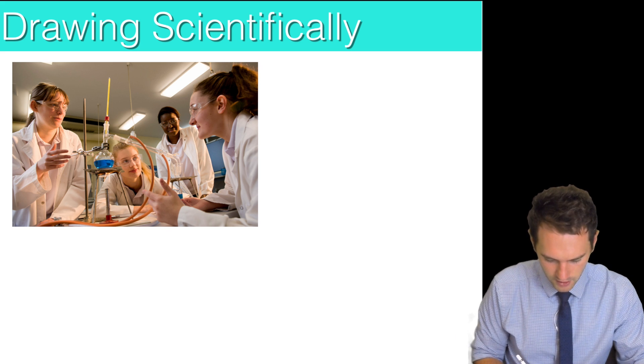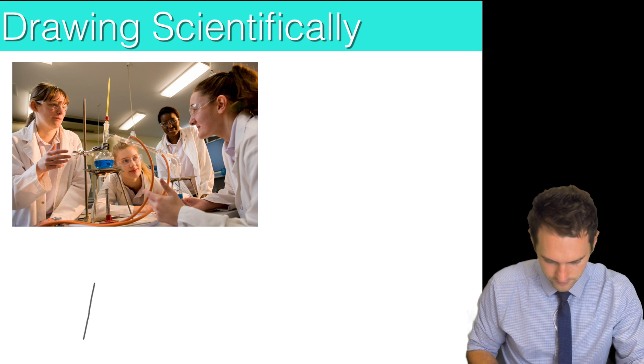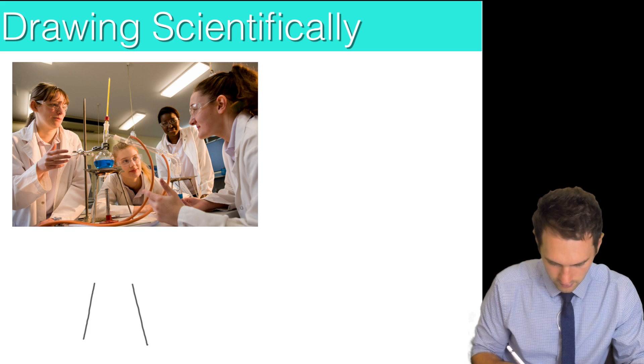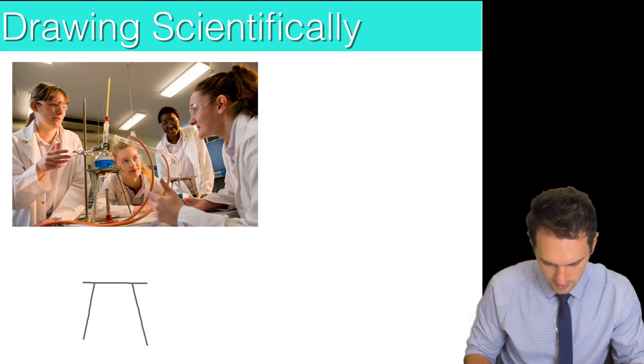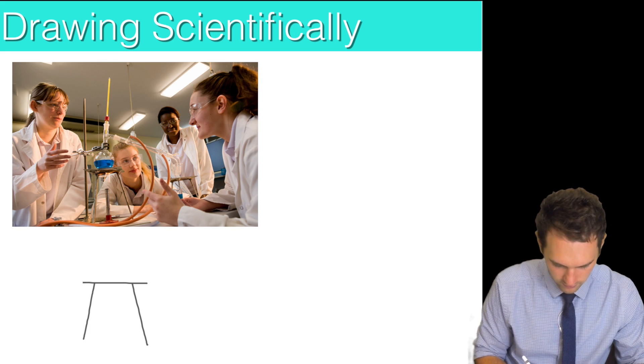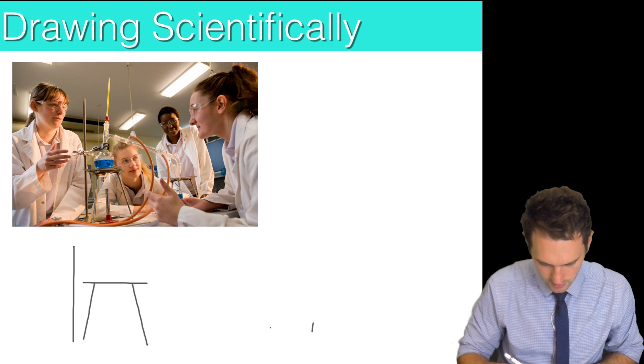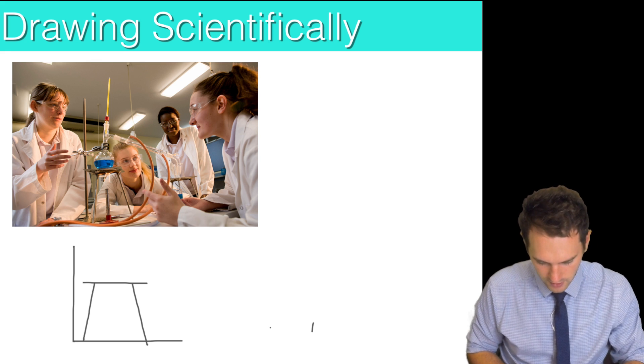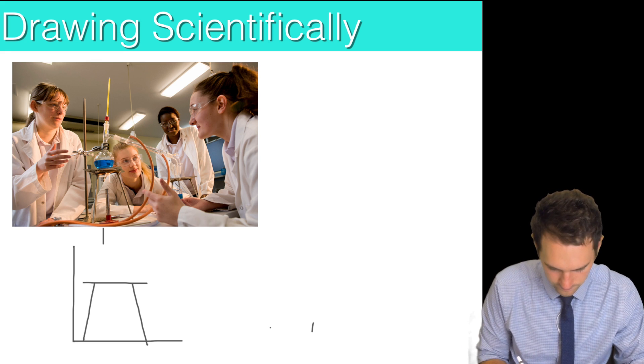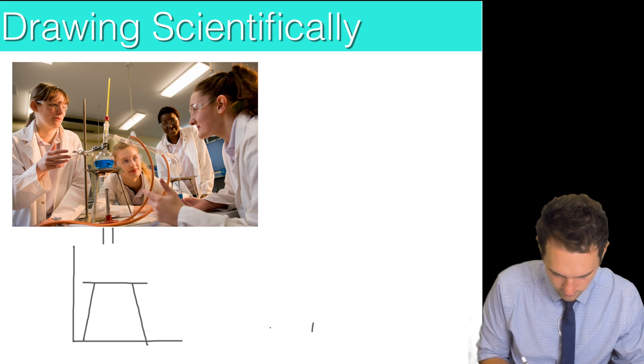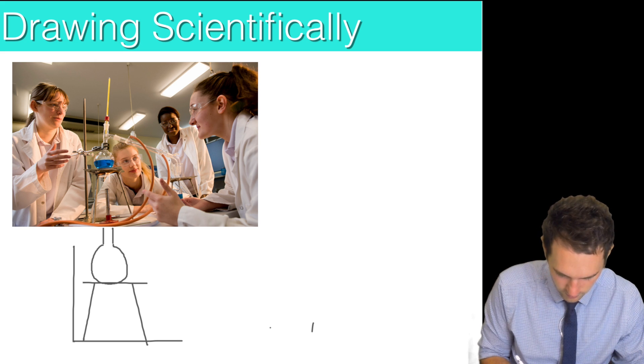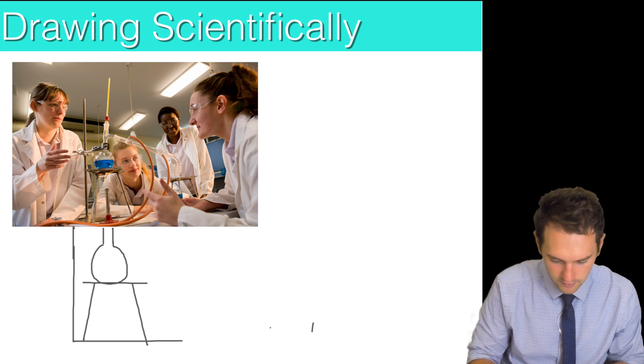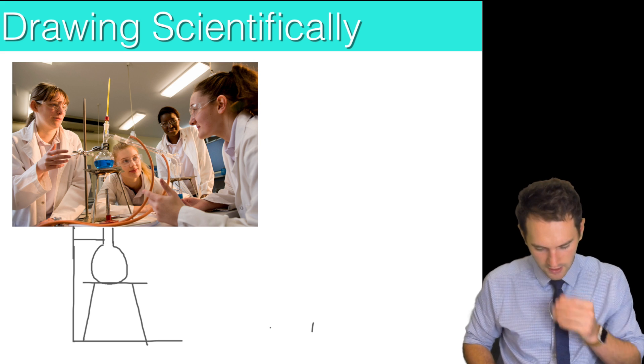I'm going to start with the tripod and it's got a top which is the heatproof mat, it's got a retort stand to the side. I'm just going to do it as quick as I can. It's got a round bottom flask on it and unfortunately I can't draw that section with a ruler, and then I will have the part that's connecting it, the clamp and the Bunsen burner.